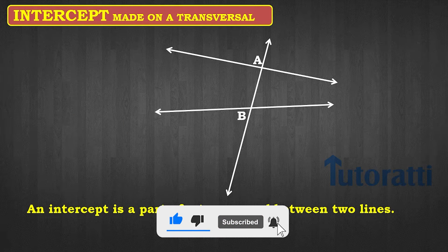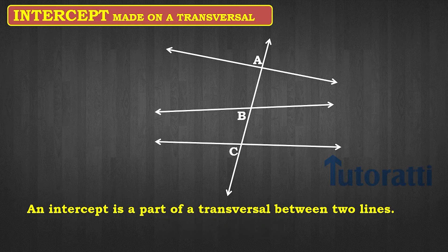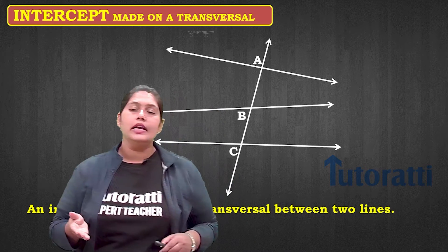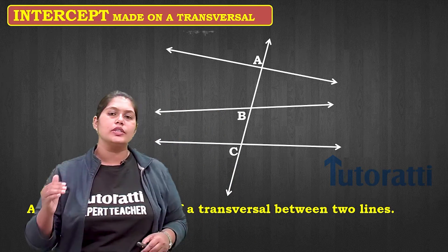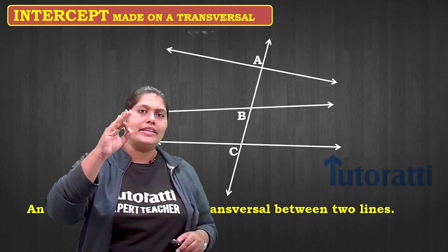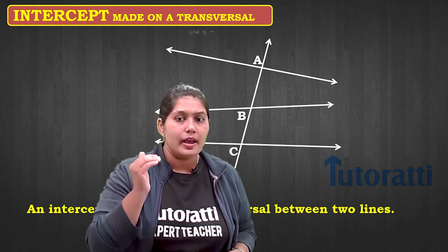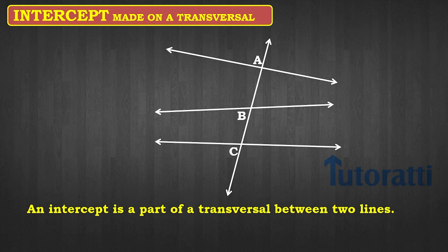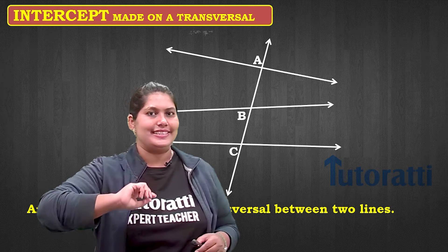Let's say there's one more third line, and now this transversal is intersecting the three horizontal lines at three distinct points A, B, and C. So what is an intercept? The intercept is a part of the transversal. The vertical line is the transversal and the intercepts are AB and BC.